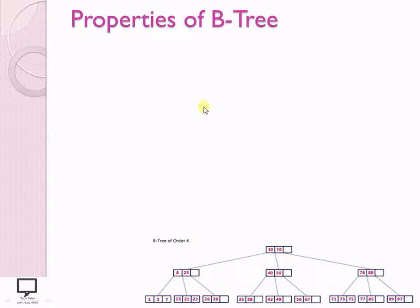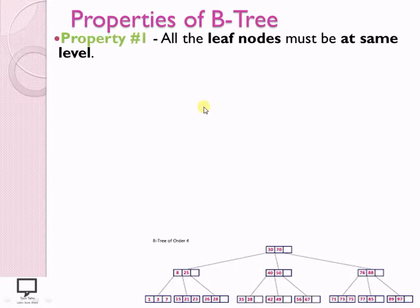Property 1 tells us that all the leaf nodes must be at the same level. Here you can see that all the leaf nodes are available at the same level.